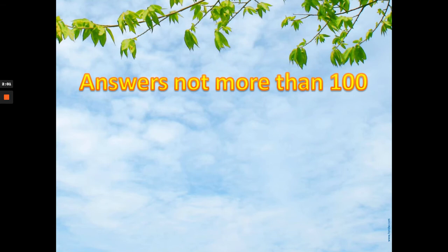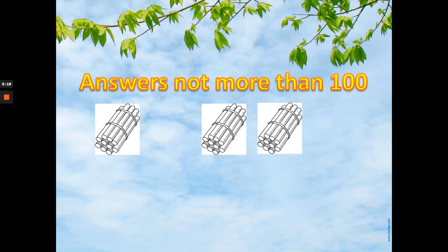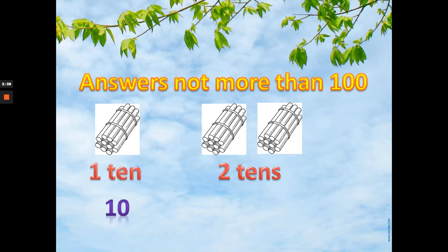We are going to add numbers with answers not more than 100. Here we are going to talk about bundles. This one is one bundle and this one is two bundles. Remember: one bundle equals one ten, two bundles equals two tens. One ten is 10, two tens equals 20.